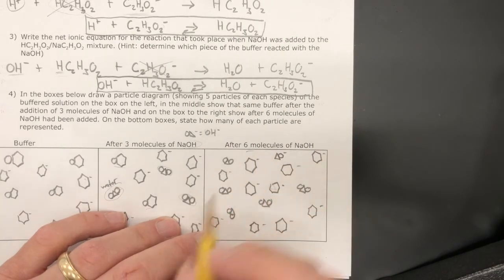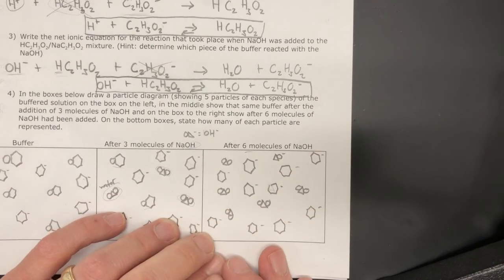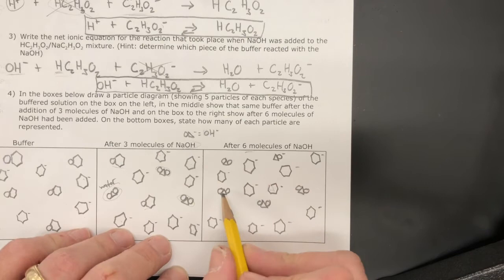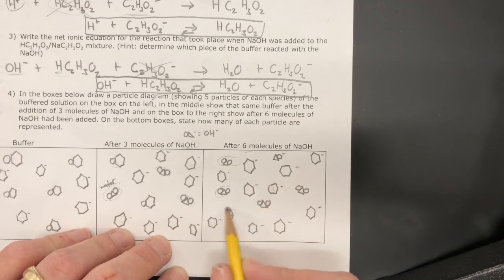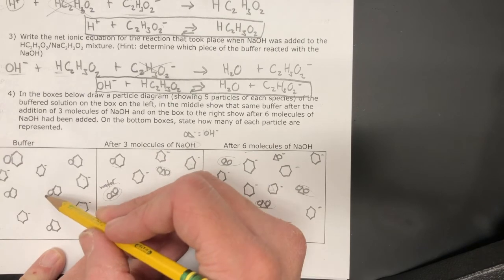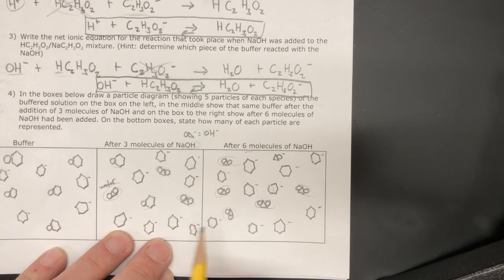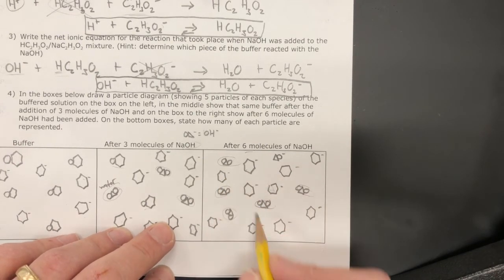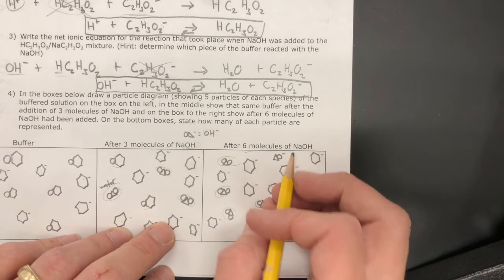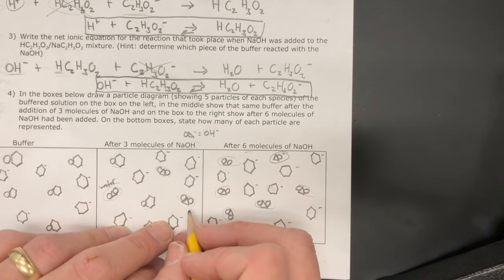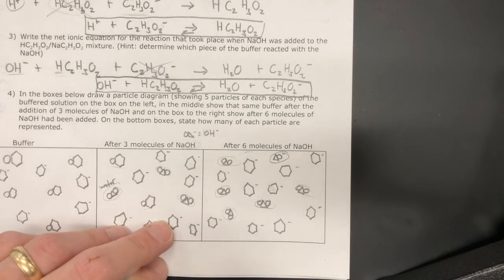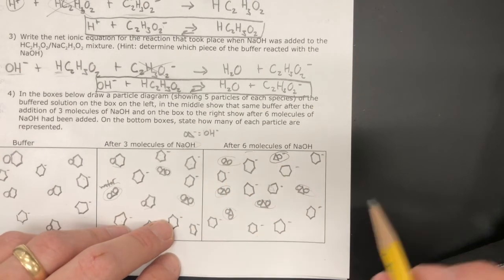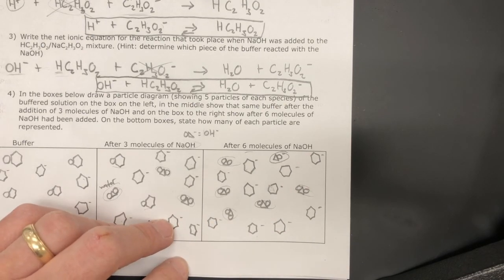So after the addition of six molecules of sodium hydroxide, now basically every weak acid molecule that we had had its hydrogen taken away. So if we started with five weak acid molecules, we can make five water molecules. All of the weak acid now has made this conjugate base, that acetate. And right here, this is excess hydroxide. So now after we've gone past the buffer capacity, you have excess hydroxide, and that's when your solution finally can take on a basic pH.